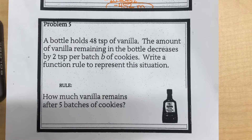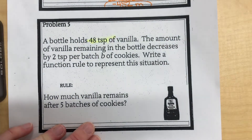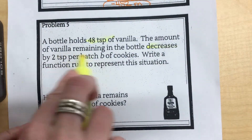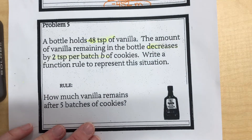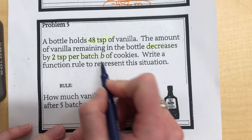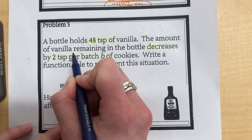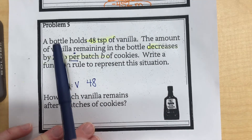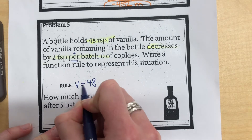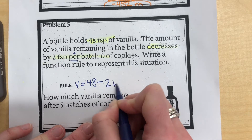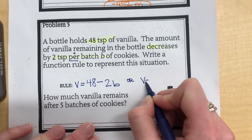Problem number 5: a bottle of vanilla holds 48 teaspoons, and the amount of vanilla remaining is decreasing by two teaspoons per batch. We're writing a function rule using V for vanilla and B for batches. We can't use B for bottle since we're using it for batches. Starting with 48, and it's decreasing by 2 teaspoons per batch. The rule is V equals 48 minus 2B, or equivalently V equals negative 2B plus 48.